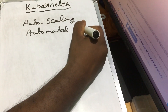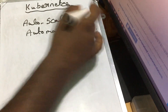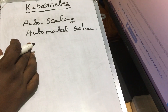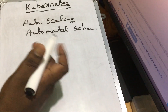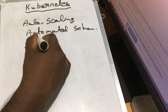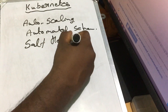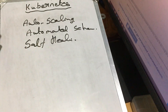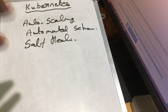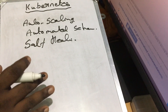With automated scheduling, if you have done it, you can deploy it. If you want to do that, you can deploy it. That is self-healing. So if you have done it in the container, you can do it automatically.